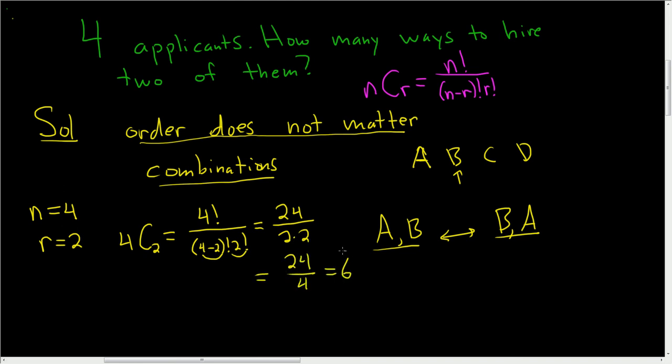I think the hard part in this problem is not the computation. Many people just use calculators for this or some type of software. It's determining whether or not the order matters. So generally, when you're hiring people and they're all applying for the same job, the order in which they were hired does not matter. So it's a combinations problem.